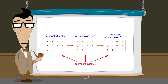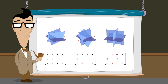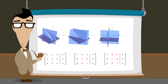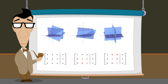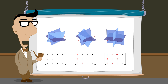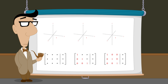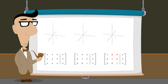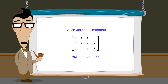These systems will typically have different graphs than the original system. But since elementary row operations don't affect the solutions of the system, the intersection points of the graphs will be the same. So let's see how Gauss-Jordan elimination transforms a matrix in row echelon form to reduced row echelon form.